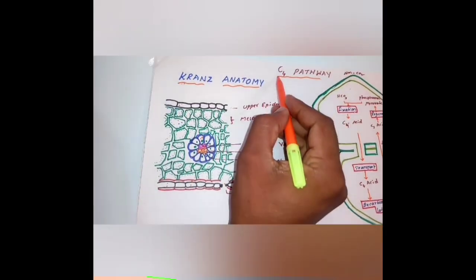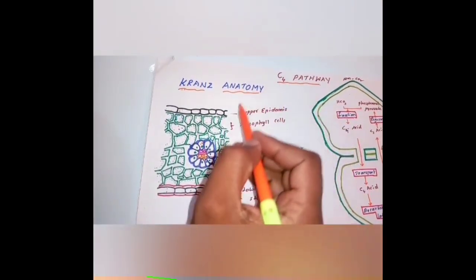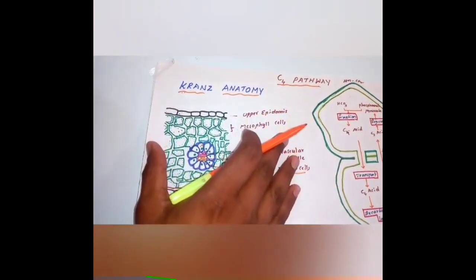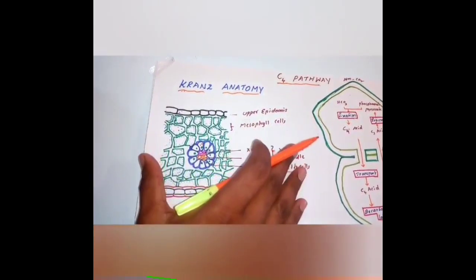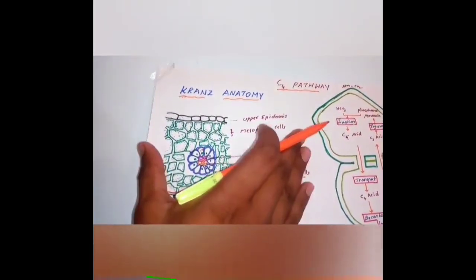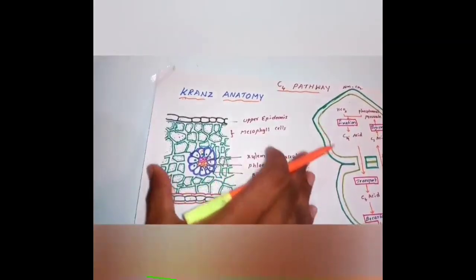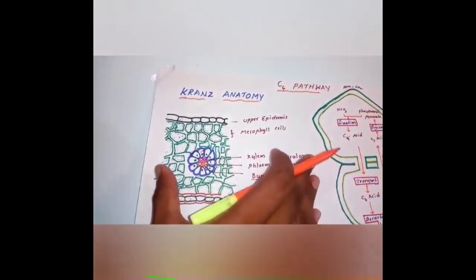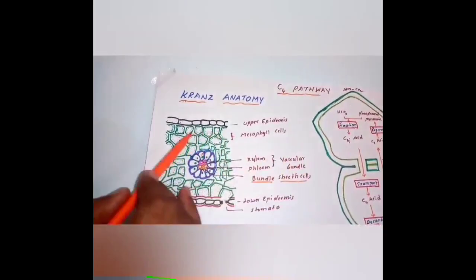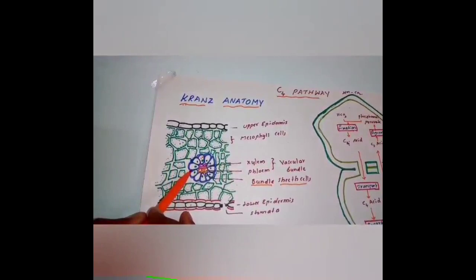Now we can try to understand the C4 pathway, which is seen in tropical and subtropical plant species like sugarcane. In these plant species, the dark reaction process is somewhat different — dark reaction takes place in two types of cells: one is the mesophyll cell as well as bundle sheath cells.